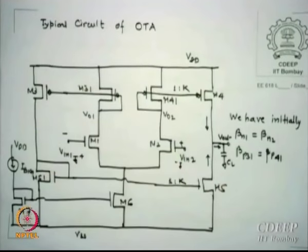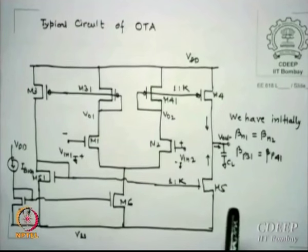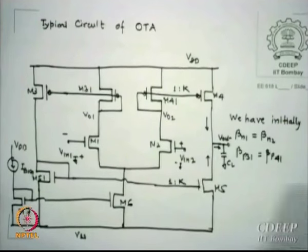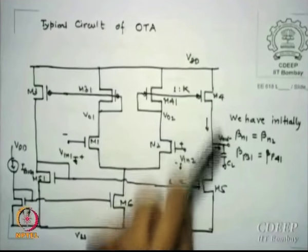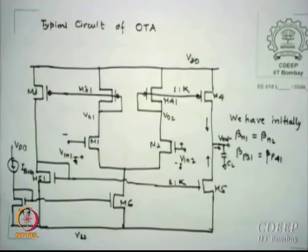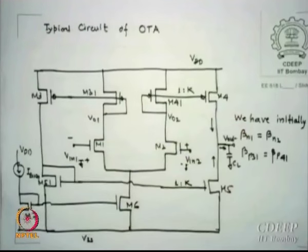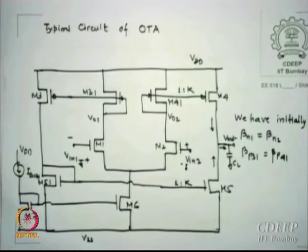For K = 1 (like a basic op-amp with no boosting), GM = GM1, and AV0 = GM1·(RO4 ‖ RO5) — same as the diffamp stage. GM1 = √(2β1·ISS) = √(2β1·IDS5/2). Choosing IDS5 = 2·Ibias, GM1 = √(2β1·Ibias). Capital GM = K·√(2β1·Ibias), so GM is proportional to √Ibias. If I change bias current, I change the transconductance.